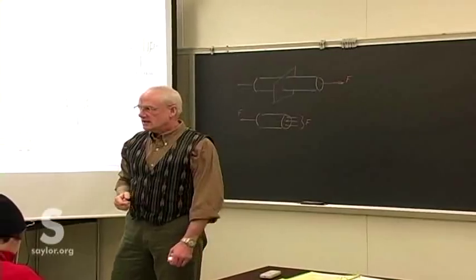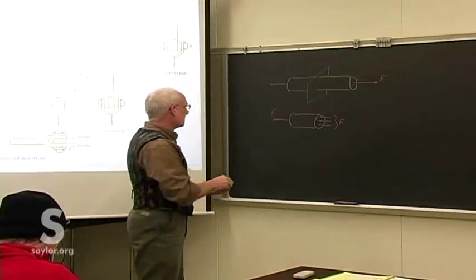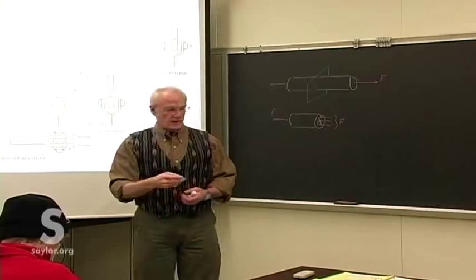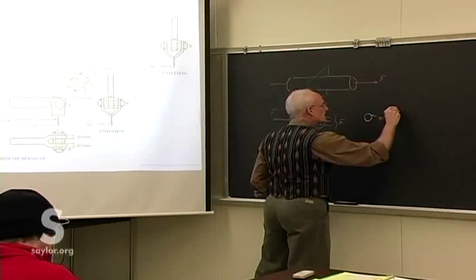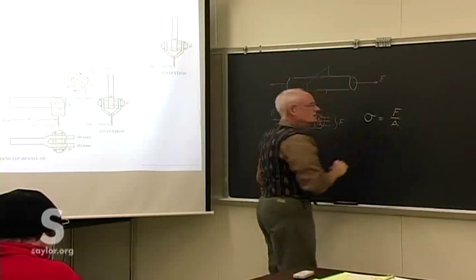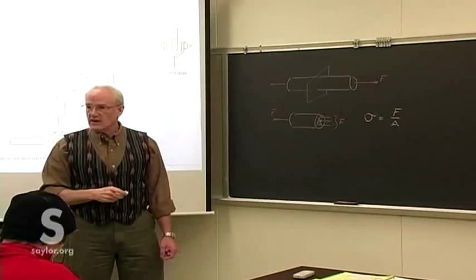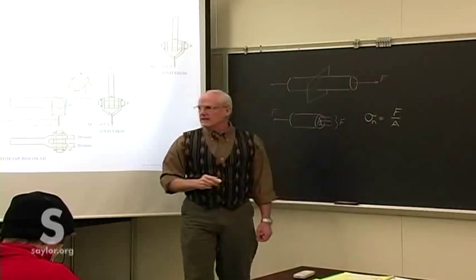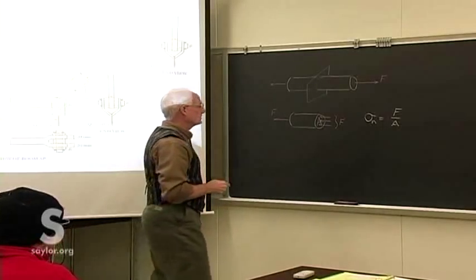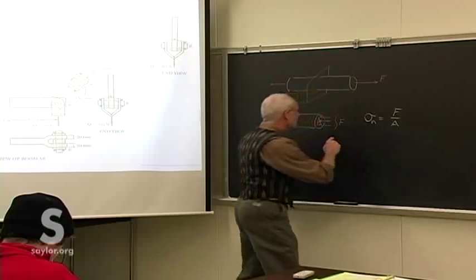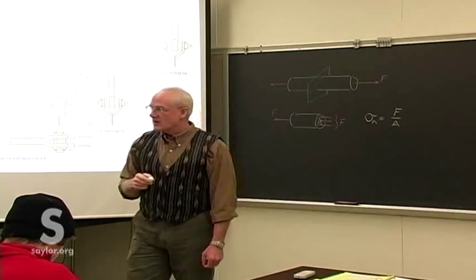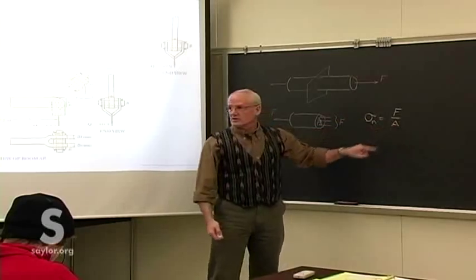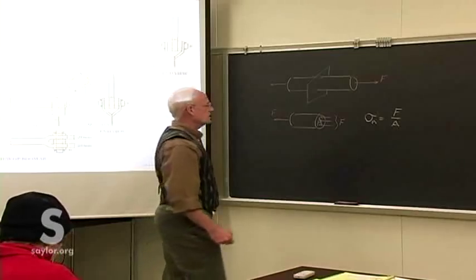We came to appreciate the other day the fact that these internal forces are spread over some cross-sectional area. For the normal stress, that's the cross-sectional area normal to the force over that face. The normal stress is the force divided by the area that's withstanding it. As the force goes up, the stress goes up. As the area goes down, the stress also goes up. So it makes sense that we do this ratio.